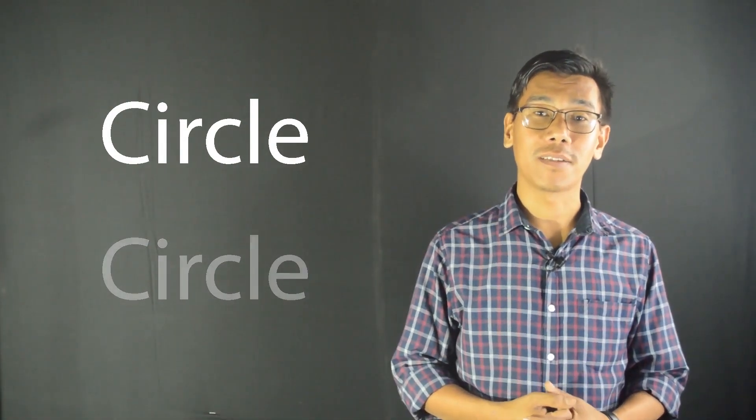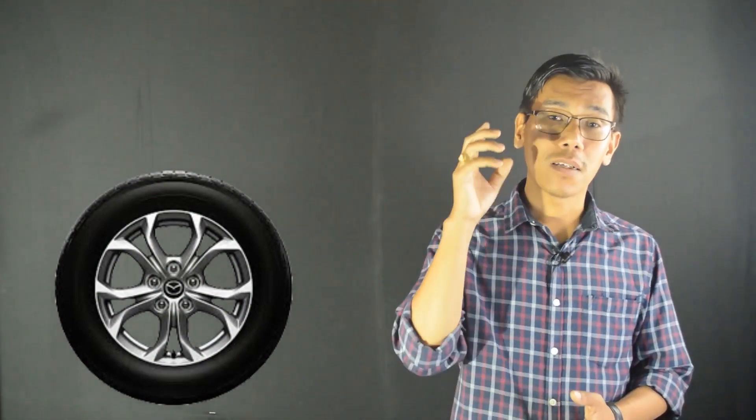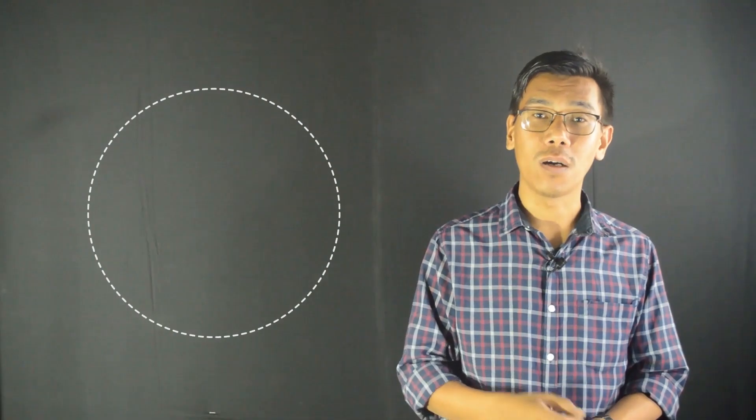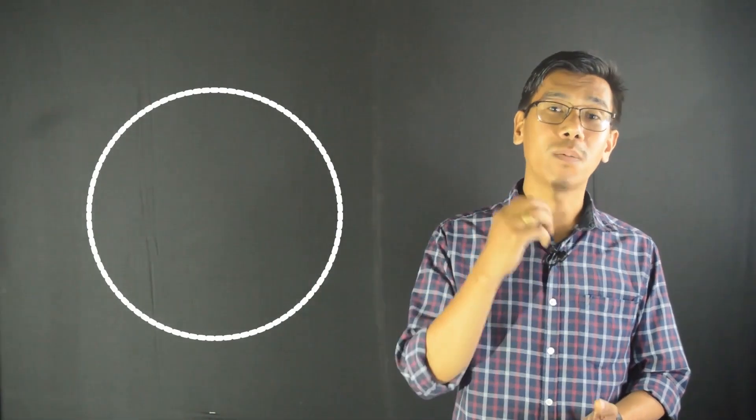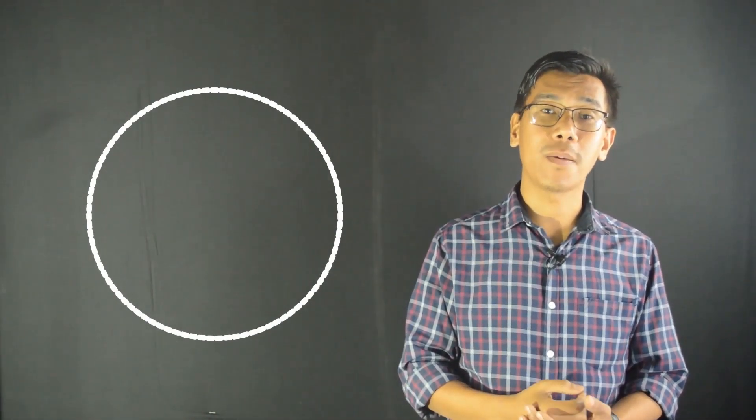This circle is an example. A circle is a circular shape where the material is rounded, a shape that is completely rounded.